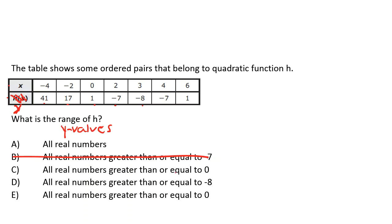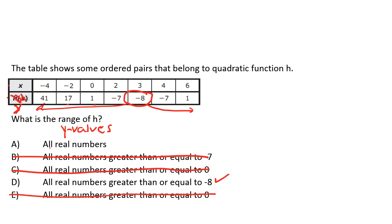C: all real numbers greater than or equal to 0. Again, it has to be negative 8 or bigger at least by our table, so it can't be C. D: all real numbers greater than or equal to negative 8. If we look at negative 8, it looks like that works because our values go up from negative 8 both ways. E: all real numbers greater than or equal to 0 — we crossed that out in C, so it can't be that either. So it's kind of between A and D; we don't really know which one it is, but we can at least eliminate down to those two.